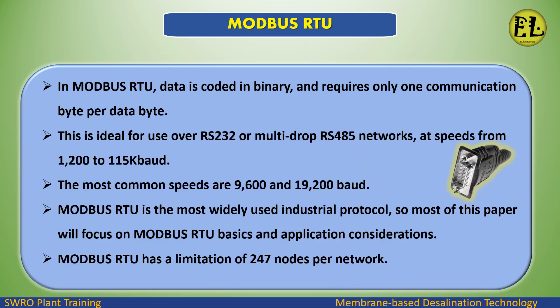Modbus RTU — data is coded in binary and requires only one communication byte per data byte. This is ideal for use over RS-232 or multi-drop RS-485 networks at speeds from 1,200 to 115,200 baud. The most common speeds are 9,600 and 19,200 baud. Modbus RTU is the most widely used industrial protocol. It has a limitation of 247 nodes per network.